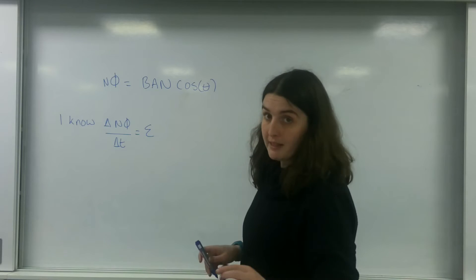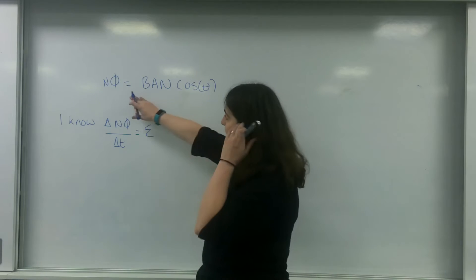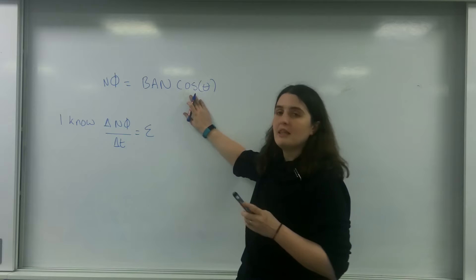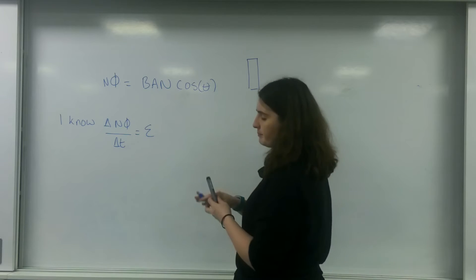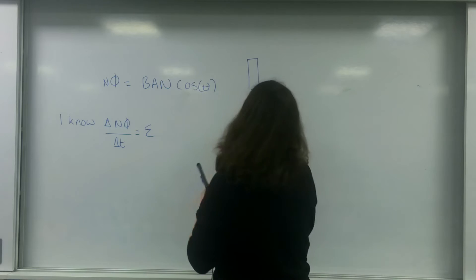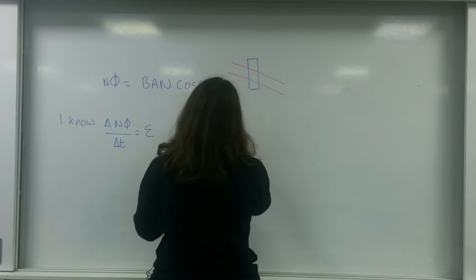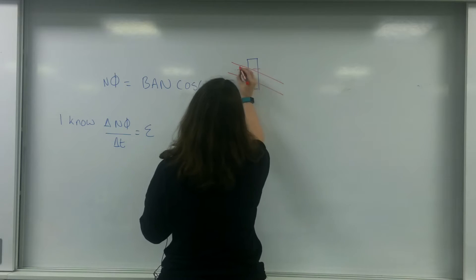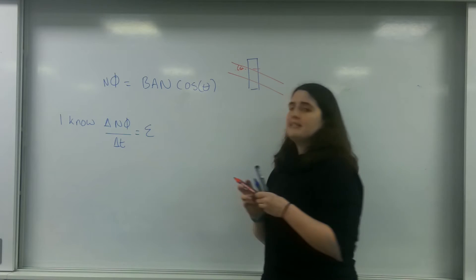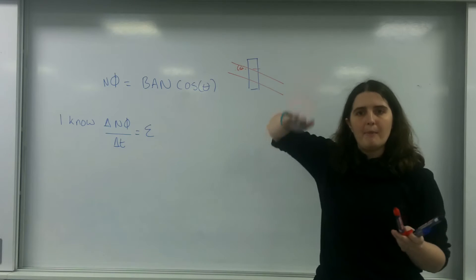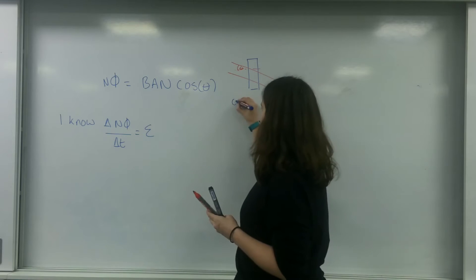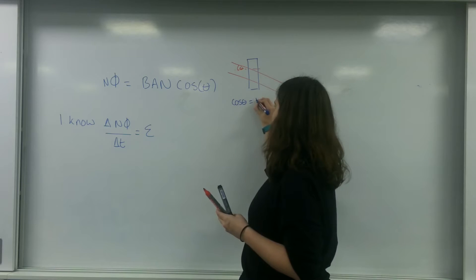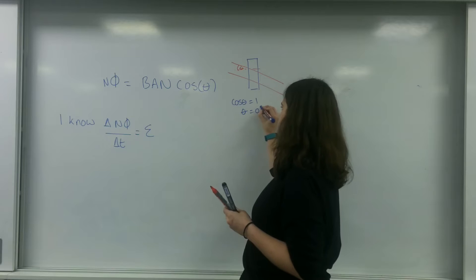We're going to come back to this formula here, that flux linkage is BAN cos theta. If I draw the diagram again, I have my box here and I have my field lines going through it like that, and theta is this angle here. It is the angle that the field lines are making with the horizontal. When cos theta equals 1, theta equals 0 degrees.